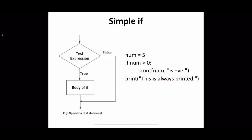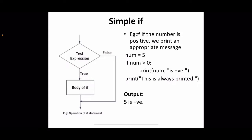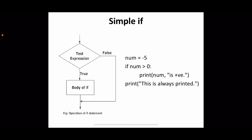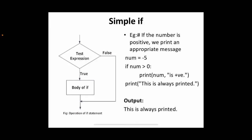Since we assigned the positive value 5, the condition is true, so the print statement executes and '5 is positive' is displayed, followed by 'this is always printed'. If we assign a negative value like minus 5, the condition is false, the print statement is skipped, and only 'this is always printed' appears as output. That is simple if — execute a group of statements based on a condition, or skip them.